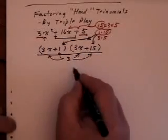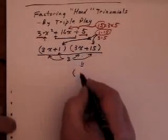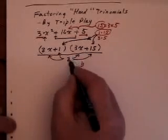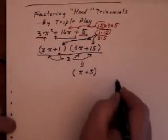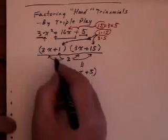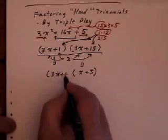So, let's divide 3 into both of those. And this bracket comes down. 3 into 3x is x, and 3 into 15 is 5. So, there is one bracket for my answer. Then I just drop this bracket down, and there is the other bracket of my answer.